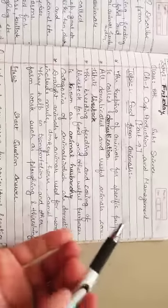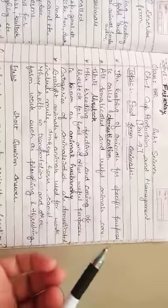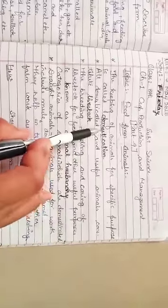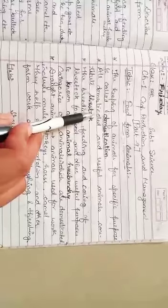All domesticated and useful animals constitute livestock. The breeding, feeding and caring of livestock for food and other useful purposes is known as animal husbandry.